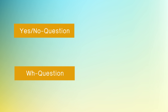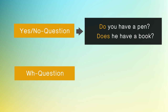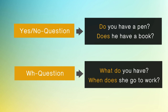จากโครงสร้างของประโยคคำถาม 2 ชนิดนี้จะต่างกันตรงที่ Yes/No question สามารถเติม do หรือ does ตรงต้นประโยคซึ่งอยู่หน้าประธานได้เลยค่ะ ขณะที่ WH-question นั้น นอกจากเติม do หรือ does หน้าประธานแล้ว ยังต้องเติมคำถาม WH ลงไปด้านหน้าสุดด้วยค่ะ และเช่นเคยนะคะ เมื่อมี do หรือ does ซึ่งเป็น verb ช่วยแล้ว verb แท้ด้านหลังก็จะกลายเป็น infinitive คือไม่เปลี่ยนรูปใดๆ เลยค่ะ แม้ว่าประธานจะเป็นเอกพจน์บุรุษที่ 3 ซึ่งในที่นี้คือ he และ she